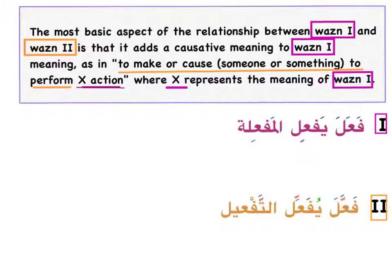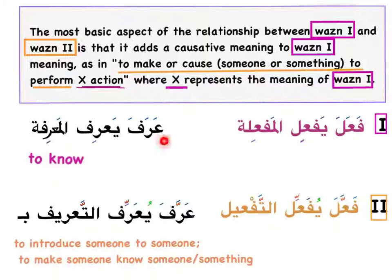We talked earlier about how fa'ala and fa''ala look the same except for the shadda. So for example, عَرَف (arafa) means to know something, and عَرَّف (arráfa) means to introduce someone. So if I say عَرَفْتُ السيارة (araftu al-sayyara), I know it for myself — but for the second one, I would make someone know something. This applies to تعريف (ta'rif): knowledge of something, versus تعريف (ta'rib): to introduce someone to something. Between fa'ala and fa''ala, the shadda makes all the difference.